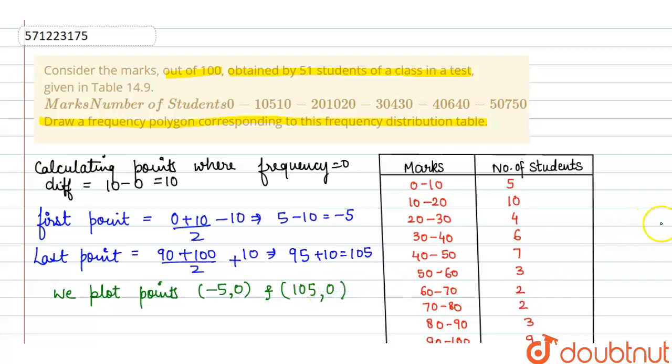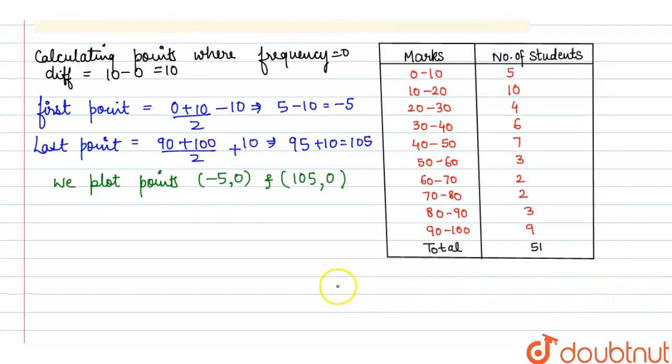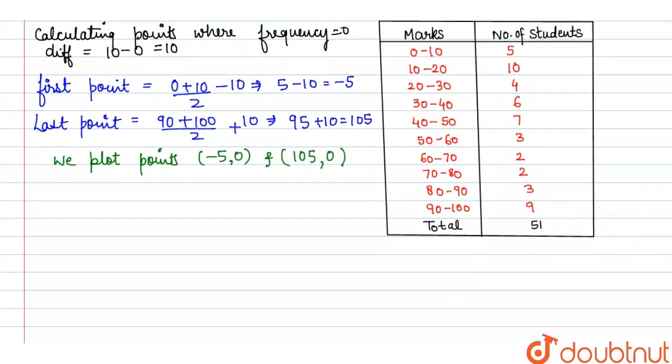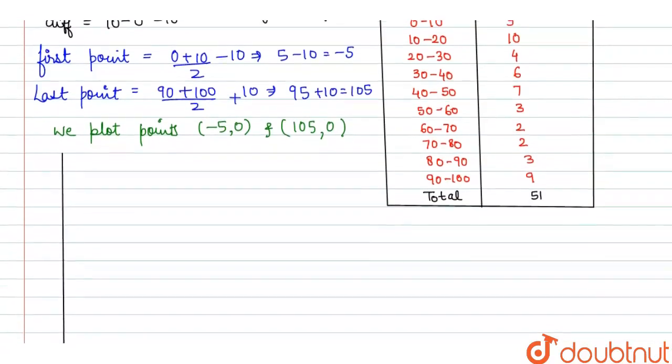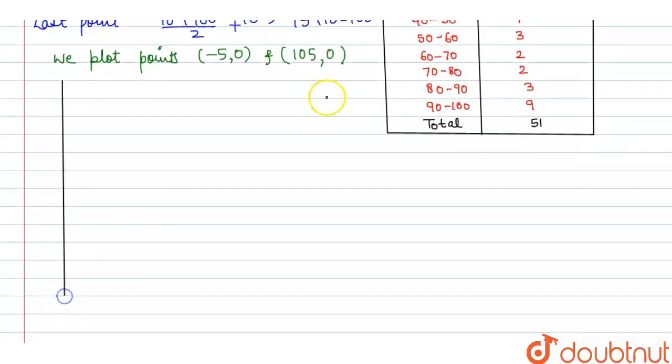Now we have to draw the histogram first for frequency polygon. Let's draw it, to draw it we have to take axis, y-axis and x-axis. It will take more space because the data is very high. So taking this is origin, this is our minus 5 because it is minus 5.